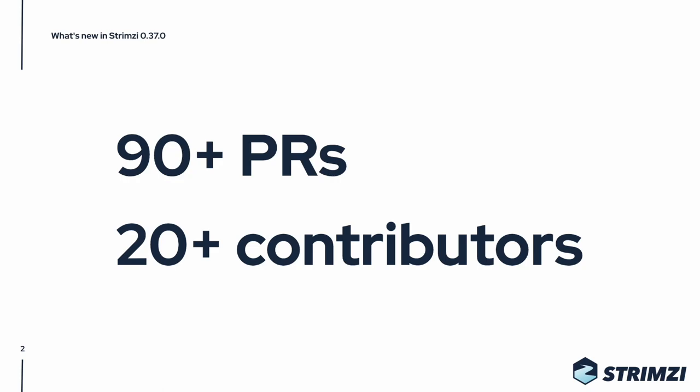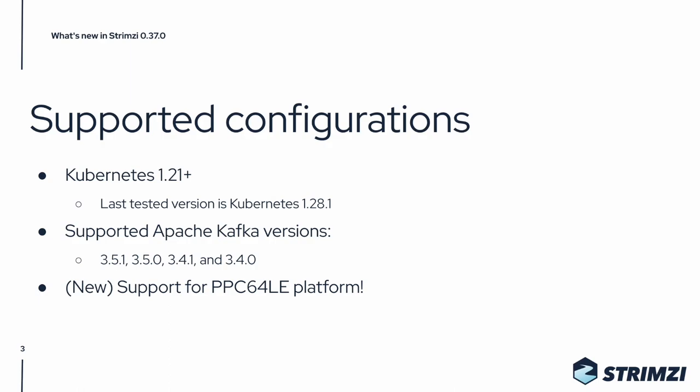Let's start with the supported configurations. Strimzi 0.37 supports Kubernetes 1.21 and newer, and the last tested version was Kubernetes 1.28.1. The supported Kafka versions are Kafka 3.5.1, 3.5.0, 3.4.1, and 3.4.0.